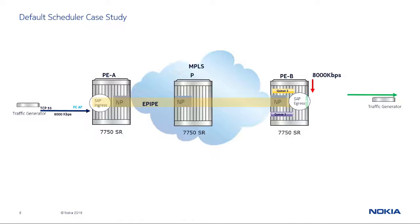The card type on PEB is an IOM3, and the default scheduler on PEB has a decision to make: it only has 8000 kilobits per second of bandwidth out of the SAP, but the aggregated rate of both streams is 16000 kilobits per second. The default scheduler will schedule all traffic from Q2 because EF is an expedited queue by default, and will drop all traffic for Q3 because it is a best effort queue. We will then change Q3 parameters so that PIR and CIR are both 8000 kilobits per second, giving Q3 a within-CIR scheduling preference.